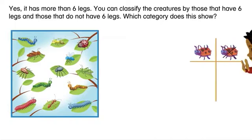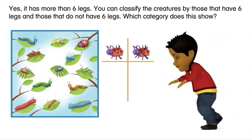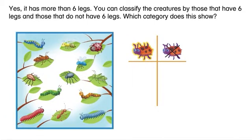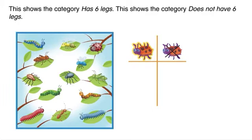You can classify the creatures by those that have six legs and those that do not have six legs. Which category does this show? This shows the category has six legs. This shows the category does not have six legs.